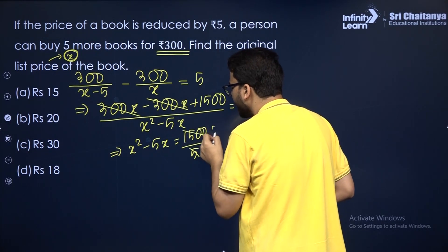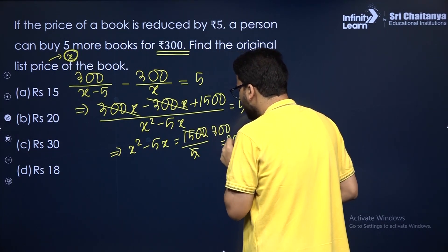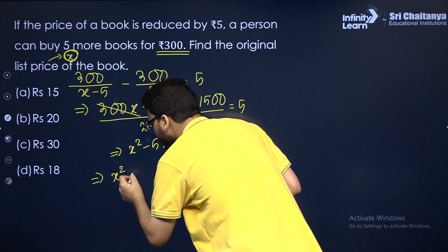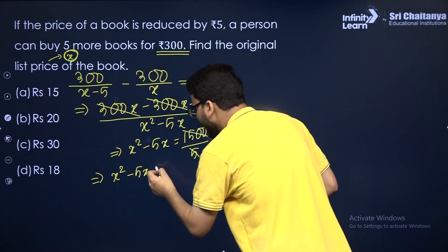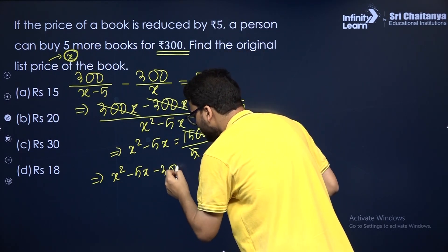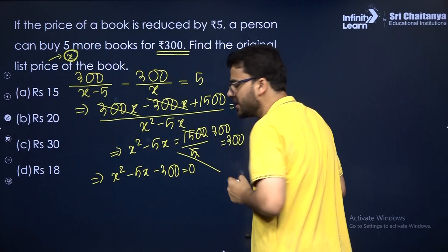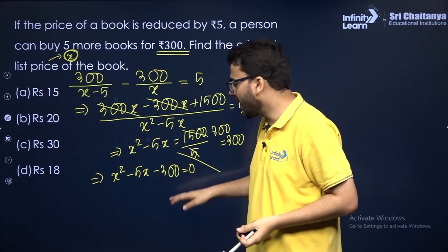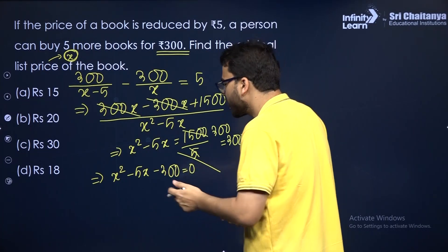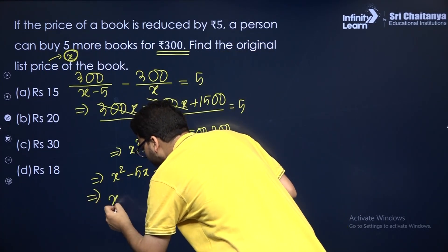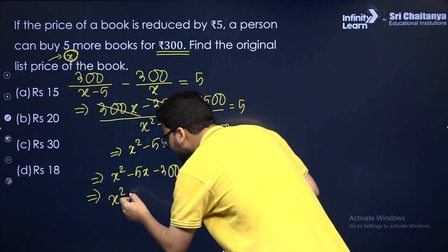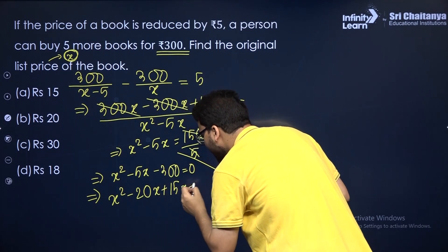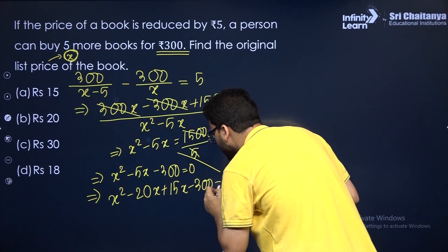Writing in standard form: X² − 5X − 300 = 0. Splitting the middle term: −5X = −20X + 15X, so X² − 20X + 15X − 300 = 0.